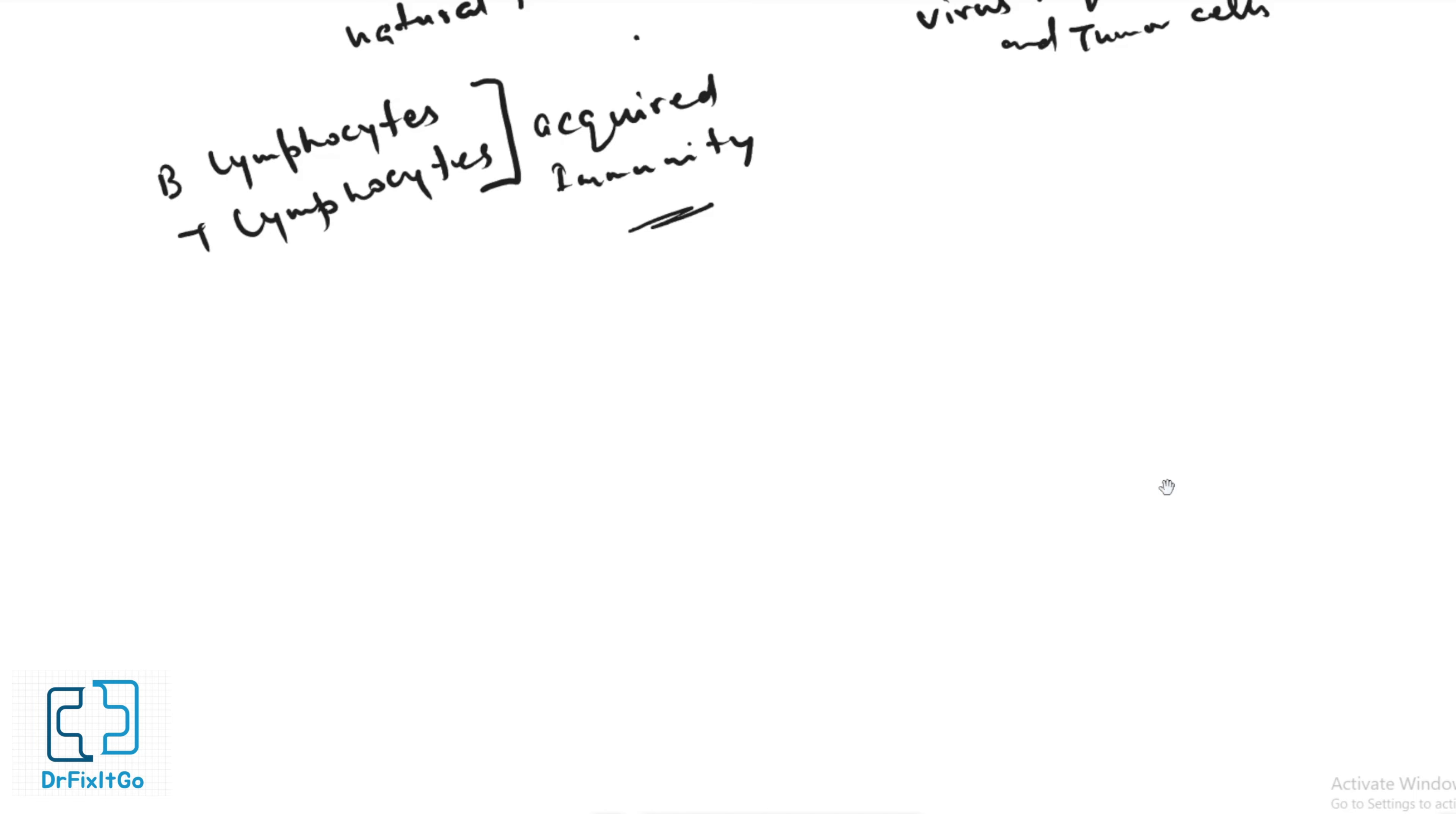The last group of leukocytes is dendritic cells. The name comes from their resemblance to the long, thin extensions like dendrites seen on neurons. Dendritic cells are found in skin, where they are called Langerhans cells, and in tissues where pathogens may enter. As active phagocytic cells, they are crucial to innate immunity and the activation of acquired immunity.